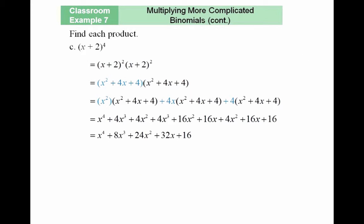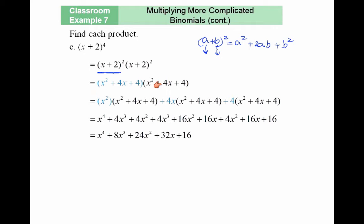Find each product: x plus 2 to the power of 4. I write this as x plus 2 squared, times x plus 2 squared, and use my properties. Expanding x plus 2 squared using a squared plus 2ab plus b squared: with a equal to x and b equal to 2, I get x squared plus 4x plus 4. The second factor expands identically.